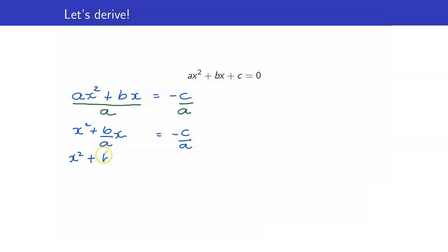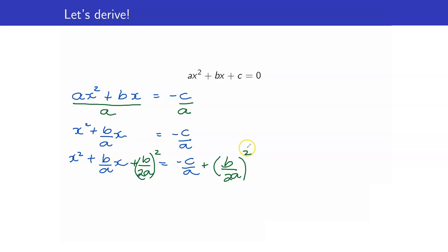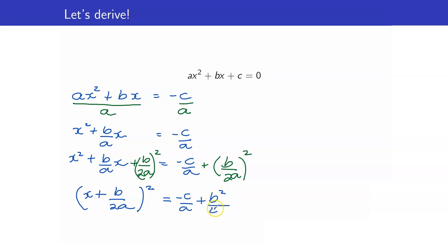What will we add to both sides of the equation? Copy the coefficient of x, which is b over a, and divide that by 2. That is b over 2a, and you square it — (b over 2a) squared. The left-hand side is now equal to the square of (x plus b over 2a). The right-hand side is negative c over a plus b squared over 4a squared. I now simplify this expression with LCD 4a squared, giving numerator negative 4ac plus b squared.